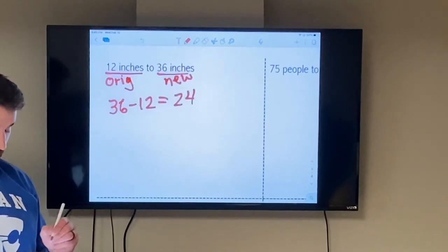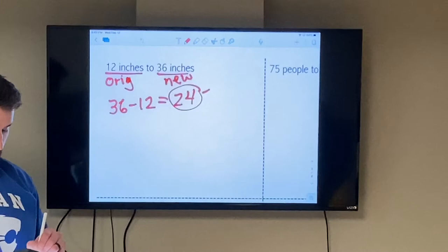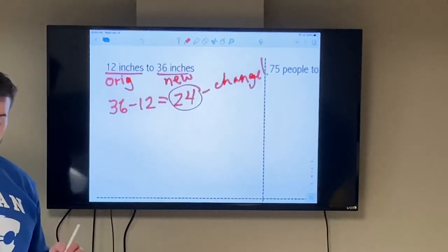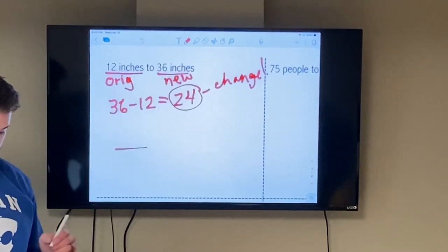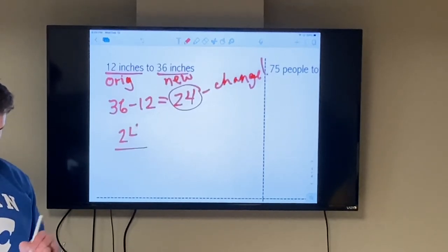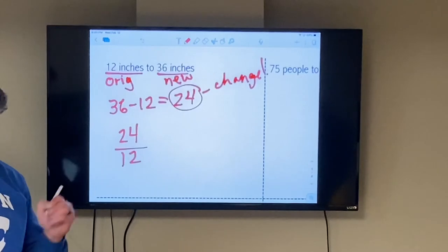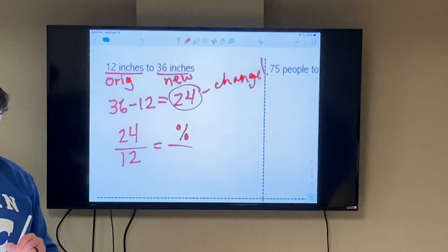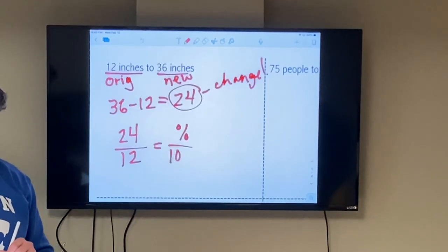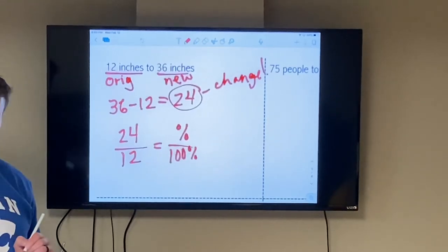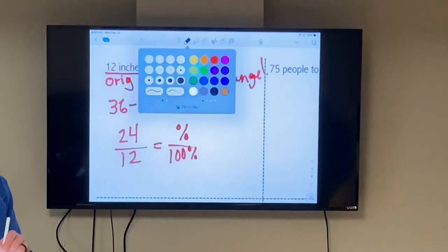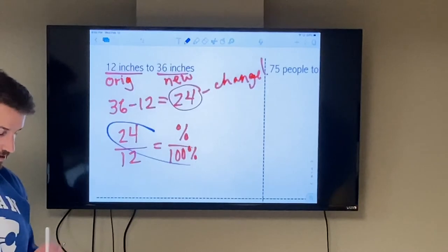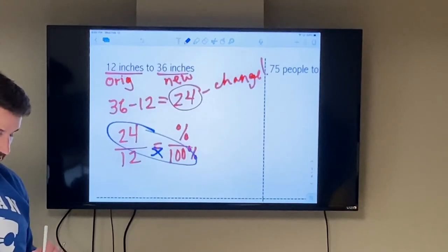So 24 is the change, the amount of change. So now I can set up my percent proportion where I have 24 over the original amount, which is 12 inches, equal to whatever the percent is going to be out of 100.